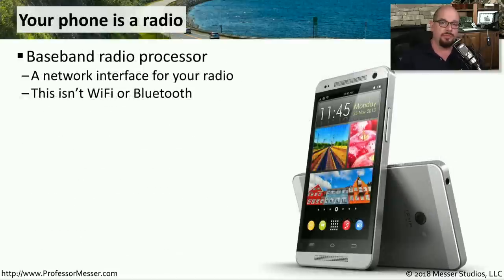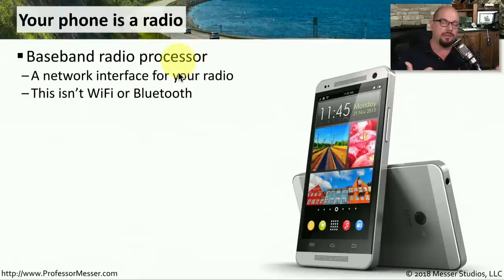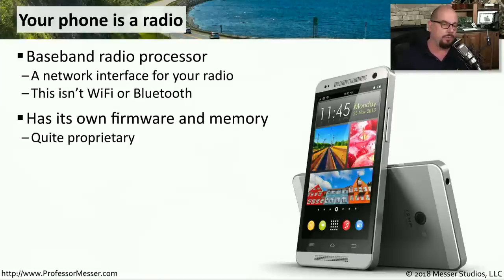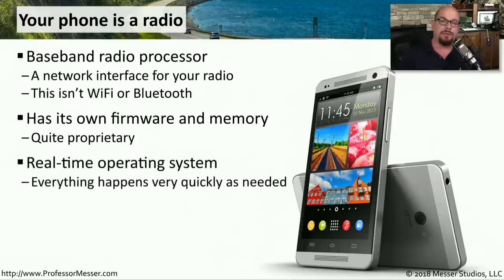To connect our smartphone to a cellular provider's network, there needs to be a radio inside of this device providing that communication. This is called a baseband radio processor. This is different than the Wi-Fi, Bluetooth, or NFC radios inside your smartphone — this one is specifically designed to communicate with the cellular provider's network. It has its own firmware and its own memory. Even though you're making phone calls over the cellular network, you never really see this particular part of the phone operating. This baseband radio processor uses a real-time operating system, which allows your phone to set a priority and communicate over that cellular network.